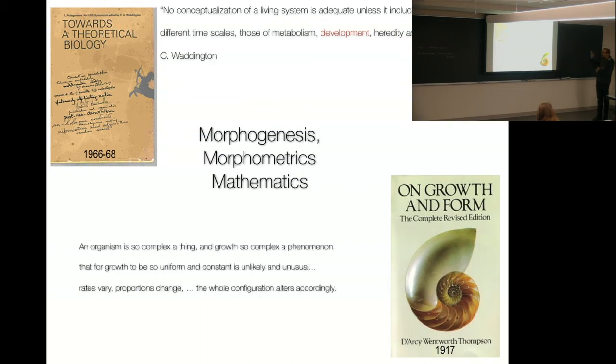D'Arcy Thompson was a biologist, a philologist, a mathematician, and author about Growth and Form. In the preface, which he called a preface and an exhortation for people to start thinking about biology and mathematics, he said an organism is so complex and growth so complex a phenomenon that growth is unlikely to be uniform and constant. So essentially, in a nutshell, telling us how form arises.